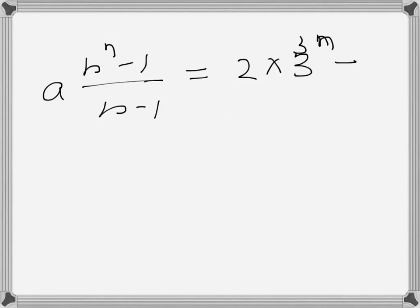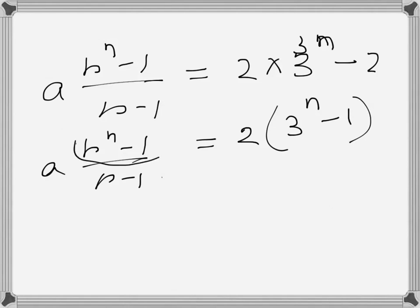So this one can be written as 2 into 3 to the power n minus 1, and this is a like that. So by observation here we can write this one is equal to this one, and a over r minus 1 is equal to 2.